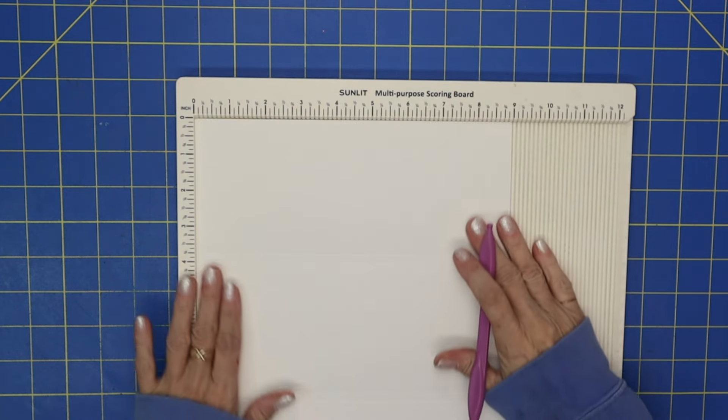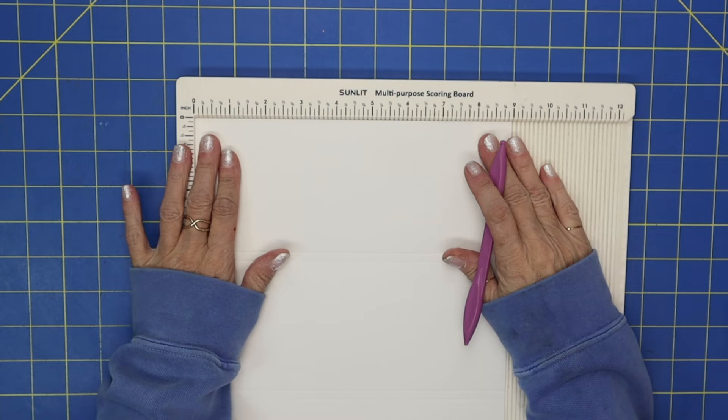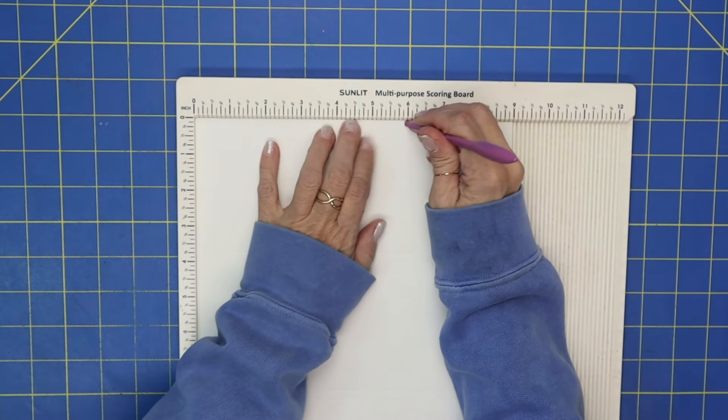And then go ahead and turn it to the 9-inch side and you want to score it at 6 inches.